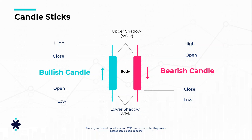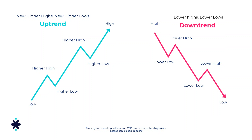How do we know if a candle will go up or down? First, we should know about market patterns and how the market moves — this is called the trend line. A trend line shows the direction of movement of an asset. If the asset is moving up, it's an uptrend; if moving down, it's a downtrend. But seeing something move up doesn't automatically make it an uptrend.